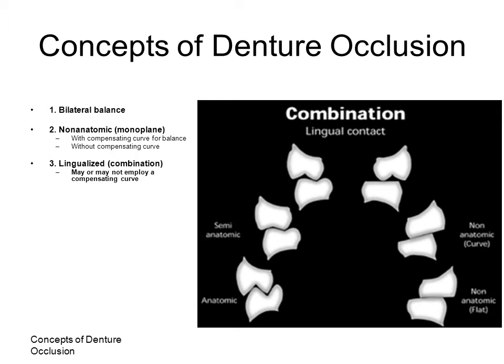The textbook describes three types of occlusal schemes. There is no scientific proof that any one scheme is superior in terms of results, although there are a variety of advantages and disadvantages attributed to each. These are the bilateral balanced articulation, in which anatomic or semi-anatomic teeth are used, and the non-anatomic articulation, which employs a non-anatomic monoplane tooth.